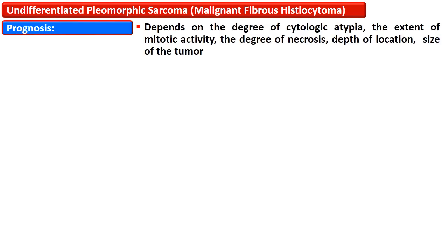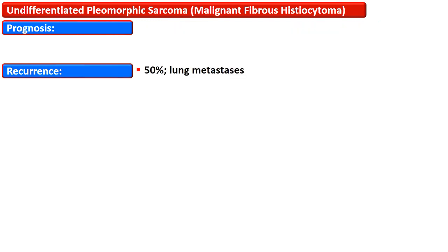The prognosis of undifferentiated pleomorphic sarcoma depends on the degree of cytological atypia, the extent of mitotic activity, the degree of necrosis, depth of location, and size of the tumor. More cytological atypia, increased cellular pleomorphism, increased mitotic activity, increased necrosis, deep location, and large tumor size are all associated with bad prognosis. The recurrence rate is about 50% and may present with lung metastasis. The 5-year survival ranges between 30 to 50%.